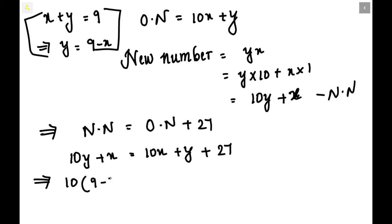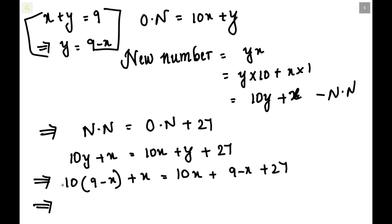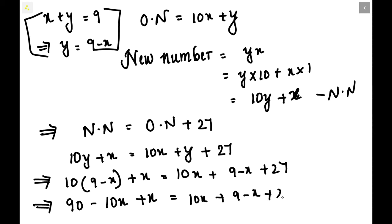Substituting 9 minus x in place of y, we get: 10 into (9 minus x) plus x equals 10x plus (9 minus x) plus 27. Expanding the bracket — 10 multiplied by 9 gives 90, minus 10 multiplied by x gives 10x — so the left side becomes 90 minus 10x plus x, and the right side is 10x plus 9 minus x plus 27.